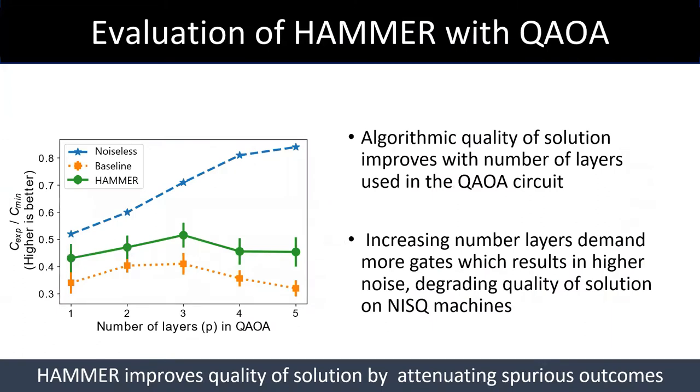In a noiseless setting, the quality of solution improves with increasing layers in QAOA. As shown in this graph, quality of solution for max cut problem will increase with increasing number of layers in the QAOA. For a baseline data that is collected on a Google Sycamore machine, we see that quality of solution is significantly lower on average due to qubit errors. Moreover, it reduces with increasing number of layers as we add more noise by performing more computation. If we use HAMMER to post-process the output data, we improve the quality of solution and we can reclaim algorithmic benefits of QAOA for small values of P. Our results indicate that using structure in qubit errors, we can build effective error mitigation techniques and enable higher quality of solution for these near-term quantum algorithms.